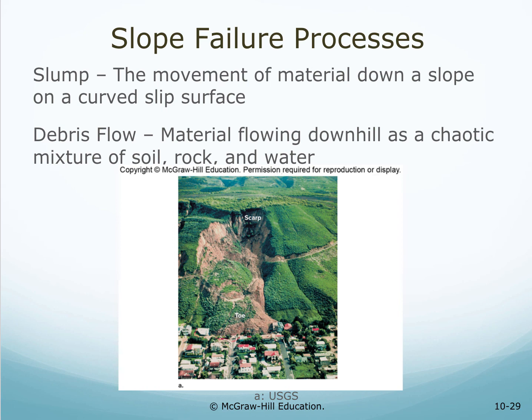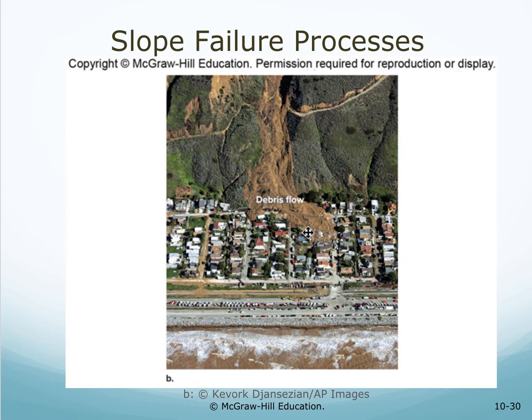A slump is the movement of material down a slope along a curved slip surface. The debris flow involves material flowing downhill as a chaotic mixture of soil, rock, and water. Living right below a slope such as this would be very risky — there appears to be a road located right in the path of potential debris.